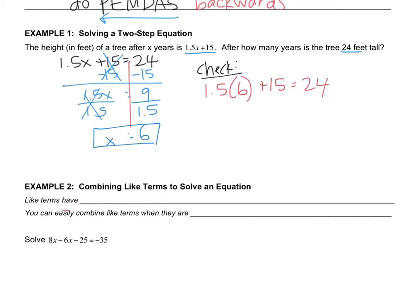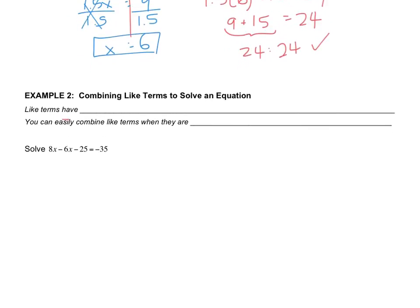Plus 15 equals 24. 1.5 times 6 is 9. And when I do this addition, 9 plus 15, I get 24. So I know I did it right. And again, I didn't have to check, but I wanted to get it right, so I wanted to confirm that I did it correctly.